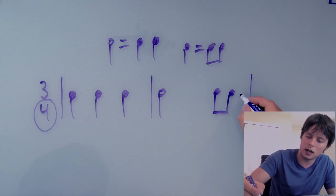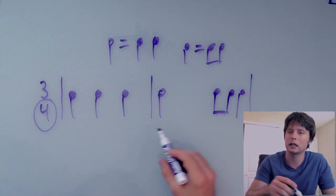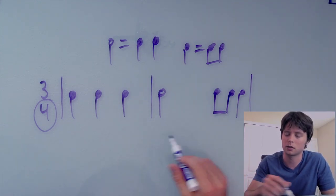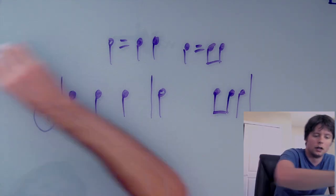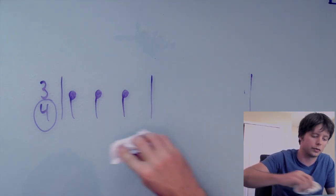However we couldn't have something like this - a half note, two eighth notes and the quarter note. That would add up to too much. That does not equal three quarter notes. So this would not work in 3-4. So there's a couple other examples.